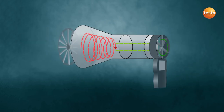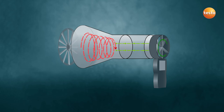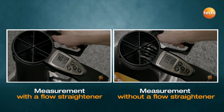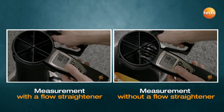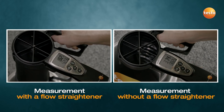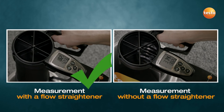What does the flow straightener do? With the patented TestoVent 417 flow straightener, any rotational movement of the air is first calmed and changed to a straight flow direction. This directed airflow is then reliably recorded with the vane. That way, the most accurate measurement results are achieved quickly and easily.